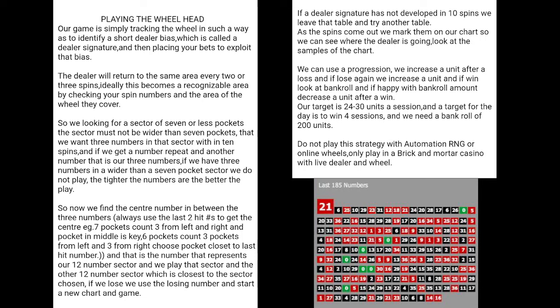If we get a number repeat — so if number 12 hits and then number 12 again — that's two in one area. If we get another number within seven pockets, then that is a playable bet and we will select a bet. If we have three numbers in a sector wider than seven pockets, we do not play. The tighter the numbers, the better the play.